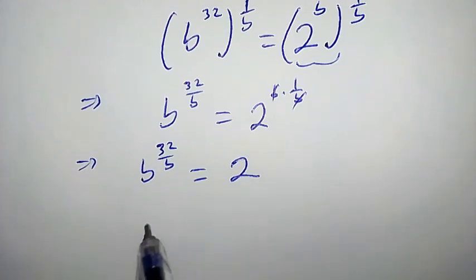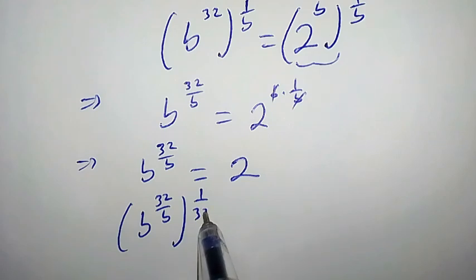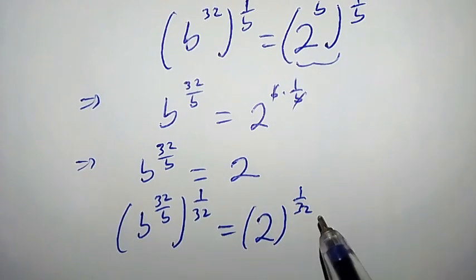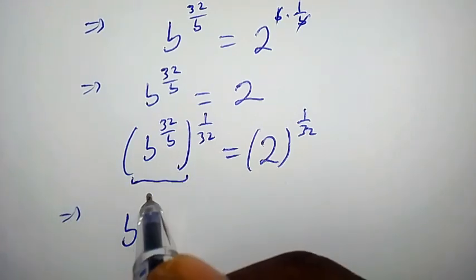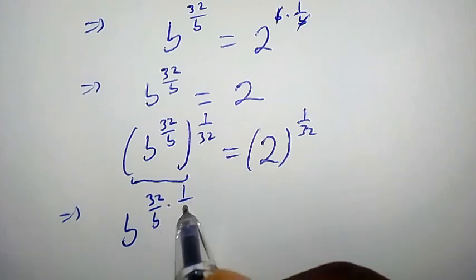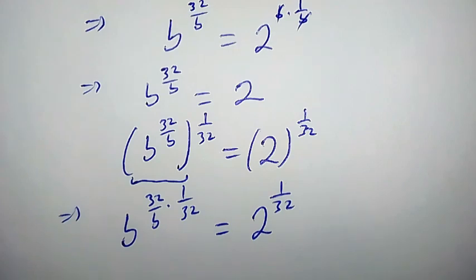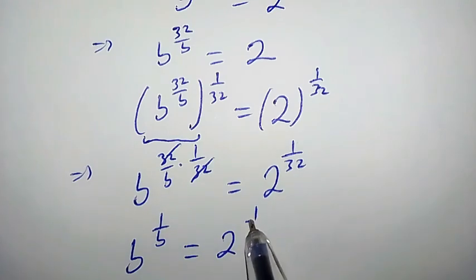Let's continue. Also, let us multiply both powers by 1 over 32, as we did earlier. So we are going to have b to the power of 32 over b times 1 over 32 equal to 2 to the power of 1 over 32. The left hand side simplifies: 32 cancels 32, so we are left with b to the power of 1 over b equal to 2 to the power of 1 over 32.